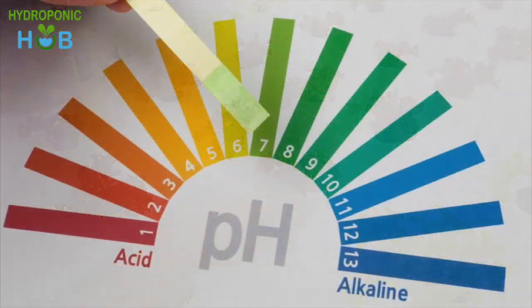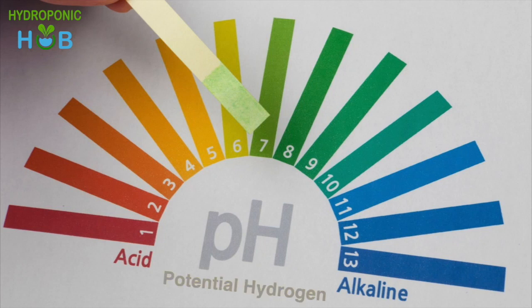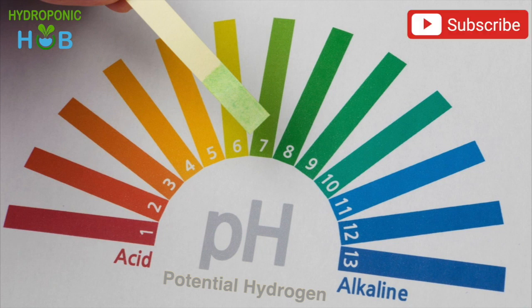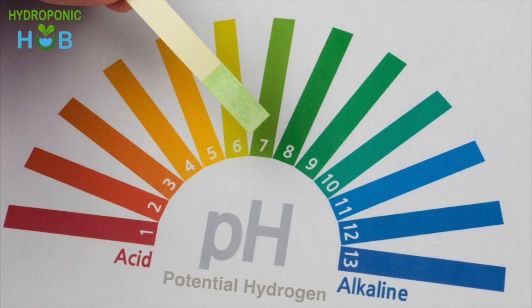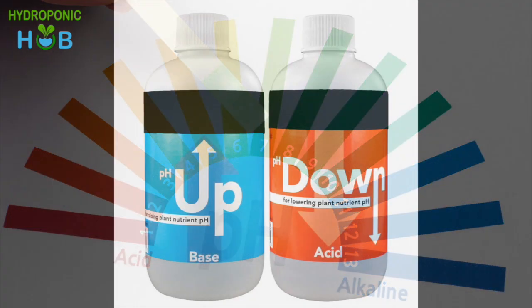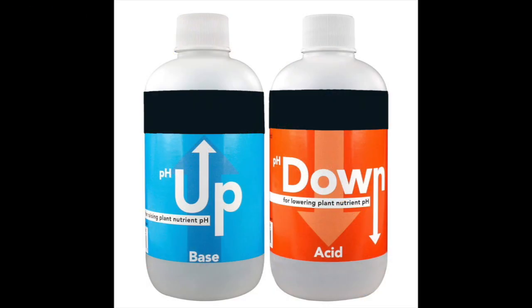pH, basically called the potential hydrogen, is a measurement from 1 to 14 of the acidity or alkalinity of the nutrition solution, with 1 being acidic and 14 being alkaline. It determines how many nutrients are absorbed by your plants, and can be measured using a pH sensor.